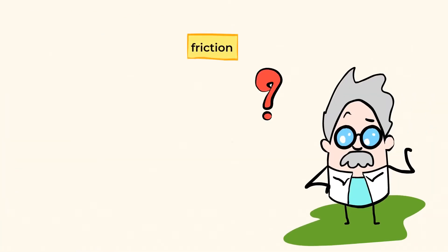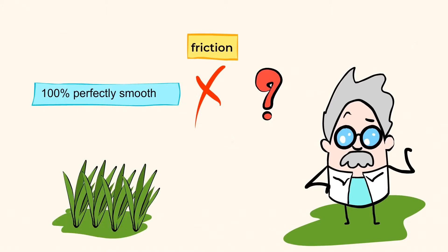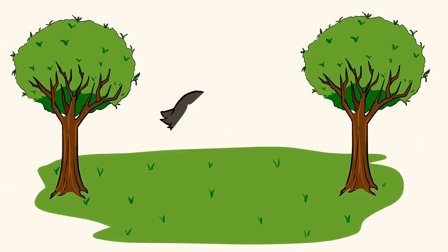But why does friction even exist? Well, friction occurs because no surface is 100% perfectly smooth. Rougher surfaces, like grass, create more friction. Have you ever tried to roller skate on grass? It's pretty difficult. You might even trip and fall.